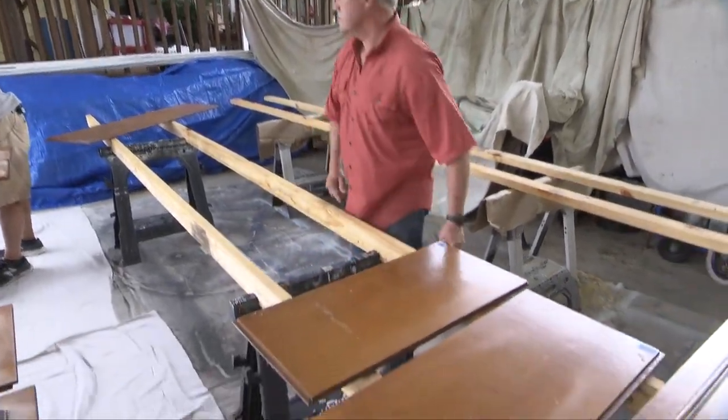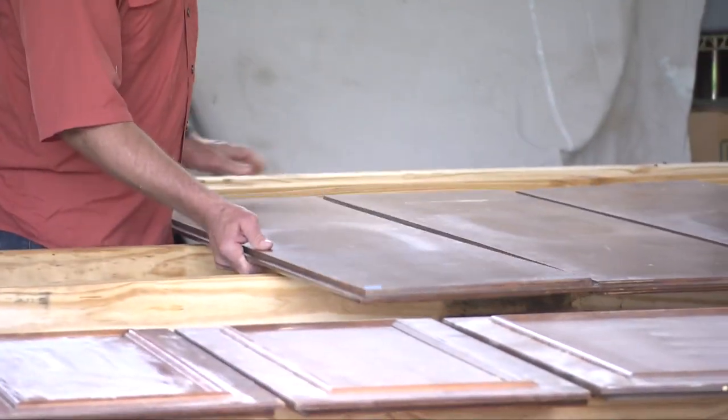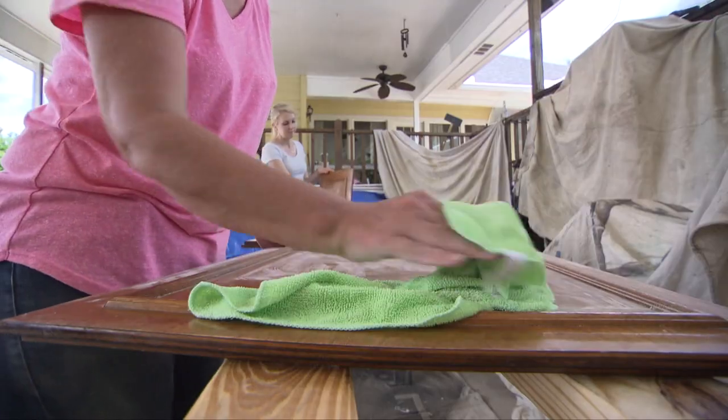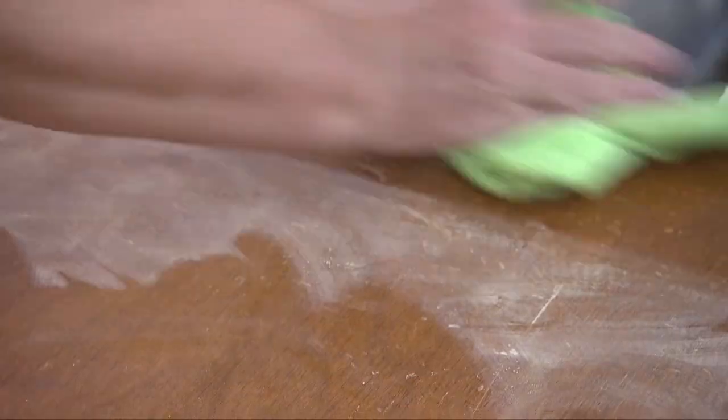Spreading the doors out on two-by-fours stretched between sawhorses will allow you to prep and paint without moving the doors. Before priming, wipe down all the surfaces with a damp rag to remove any dust.